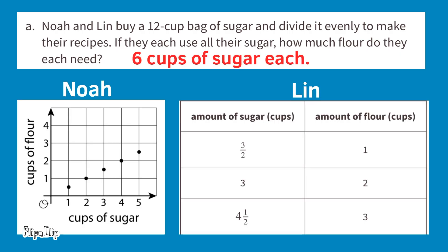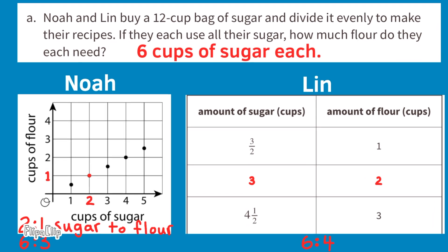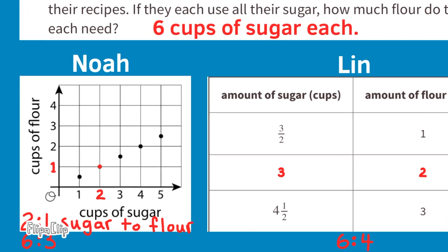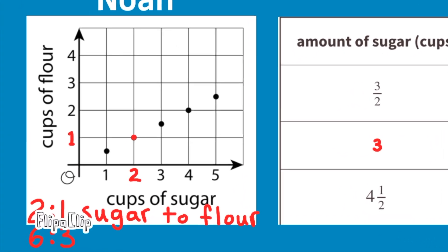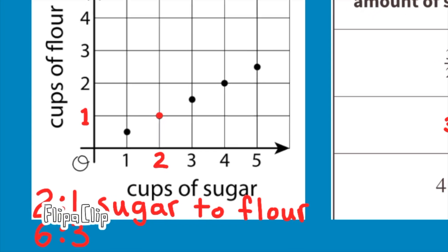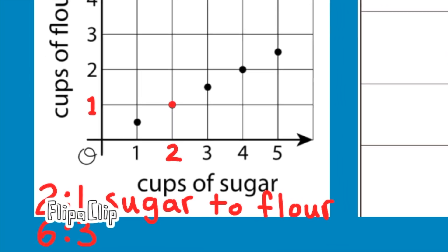They'll each use 6 cups of sugar. Noah's graph shows he uses 2 cups of sugar for every 1 cup of flour. Lynn's table shows she uses 3 cups of sugar for every 2 cups of flour. For Noah, scaling up: 2 cups of sugar × 3 = 6 cups of sugar, and 1 cup of flour × 3 = 3 cups of flour.